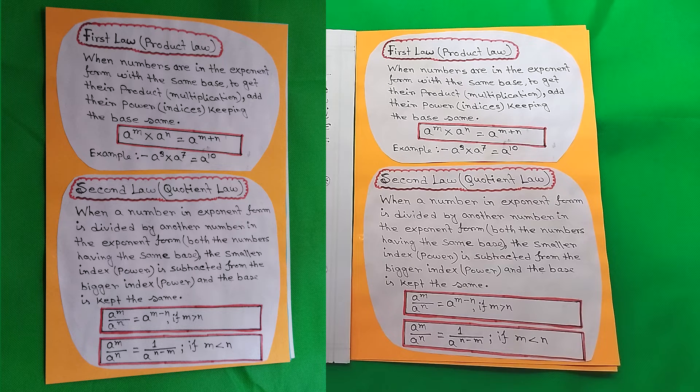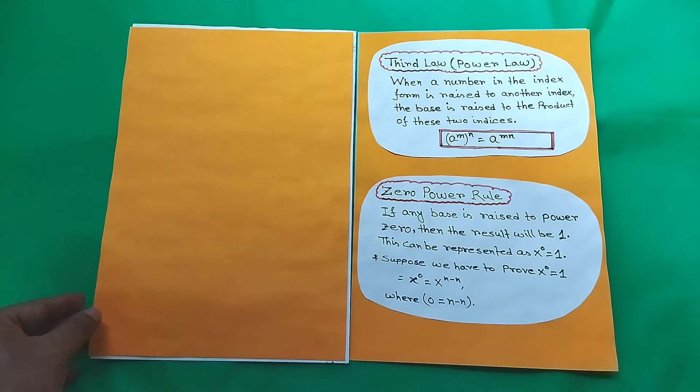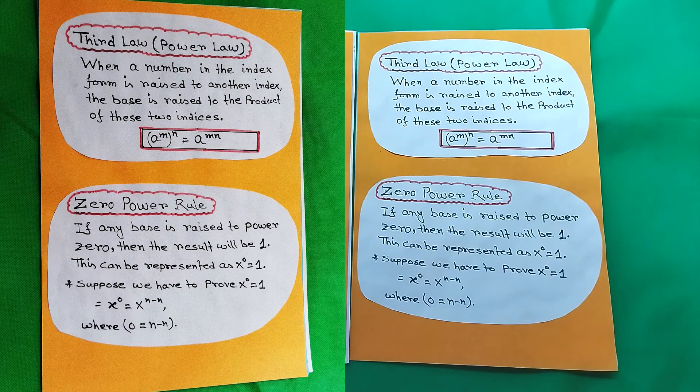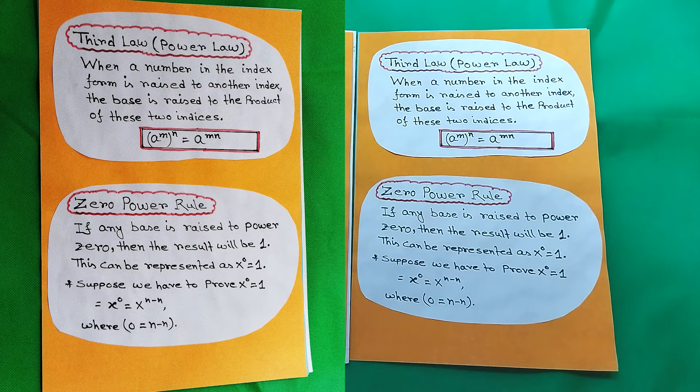Here is the third law, also named Power Law. For this law, a to the power m within brackets to the power n equals a to the power m times n.